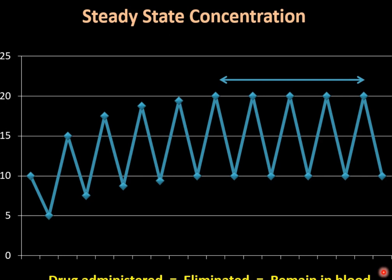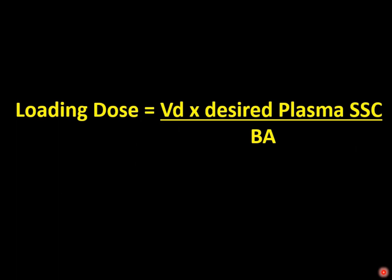For some drugs with a very long plasma half-life, like digoxin which has a half-life of 168 hours, we cannot wait that prolonged time to achieve steady state concentration. In such situations, we use a loading dose. The loading dose equals the volume of distribution multiplied by the desired plasma steady state concentration, divided by the bioavailability.